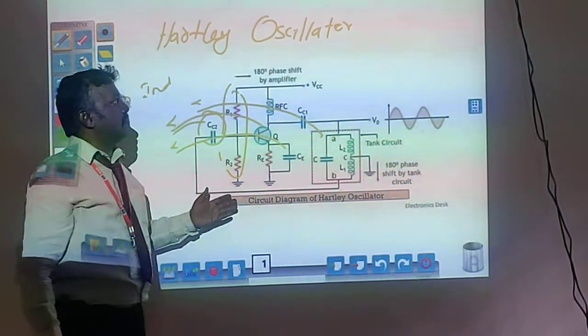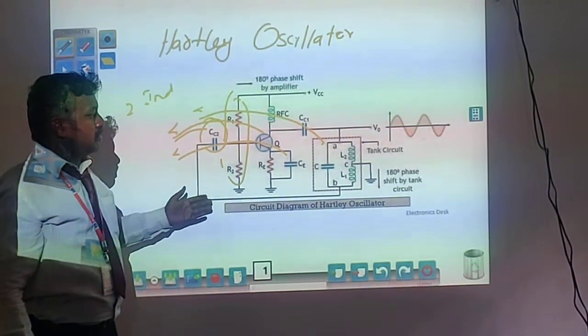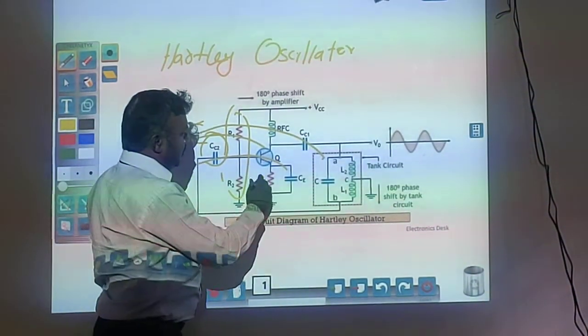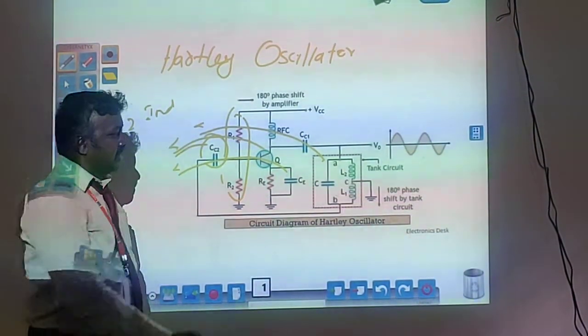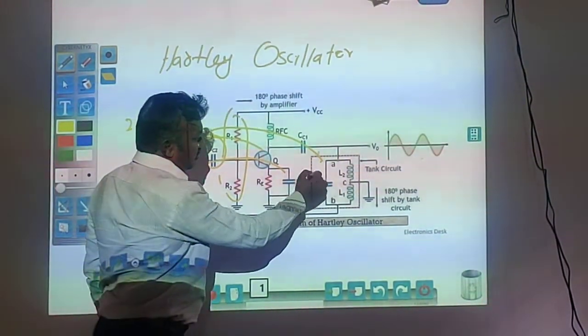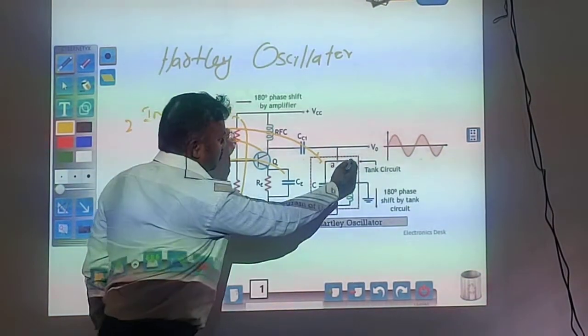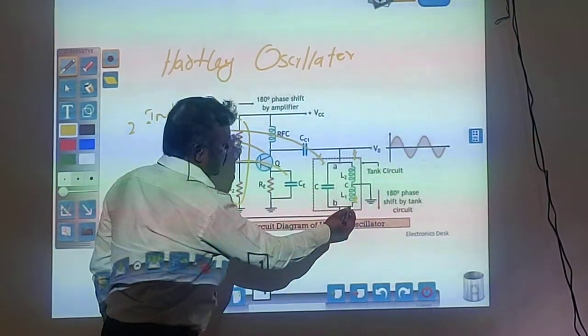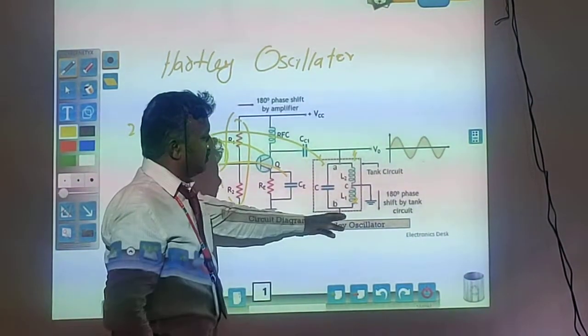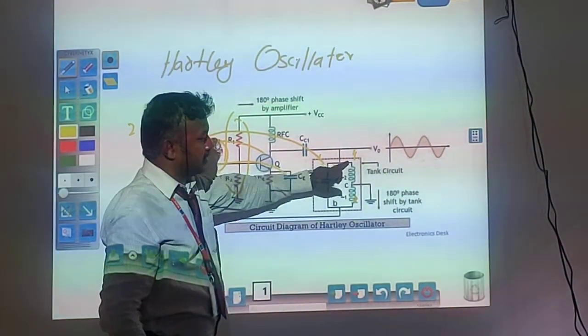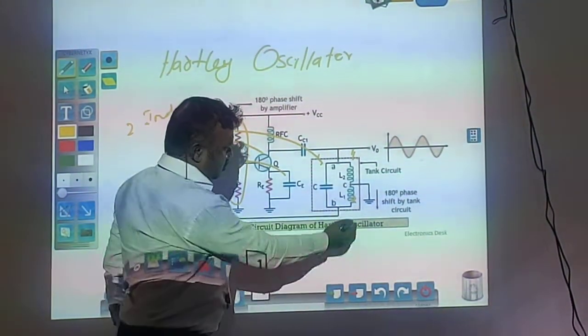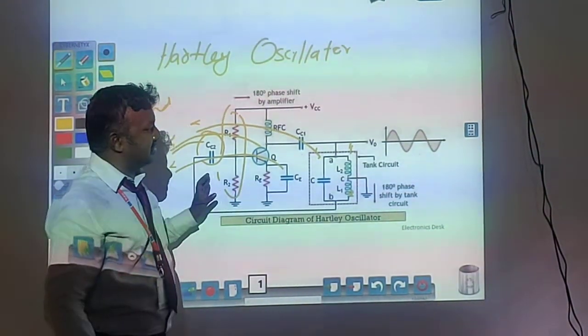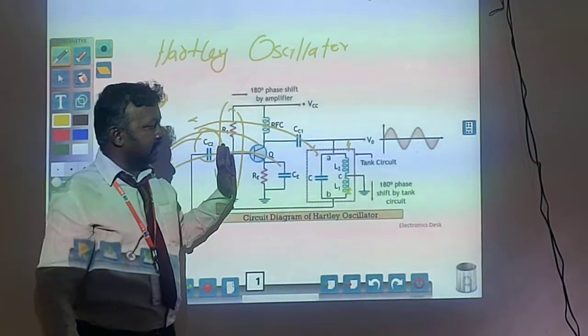These are the basics of the oscillator. Regarding the working, when we switch on the circuit, initially the transistor will be in the off condition. At position 1, with respect to position 2, it will be positive. Position 1 will be positive with respect to position 3, and position 3 is negative. At this point, the transistor will be conducting and allowing the output to flow.